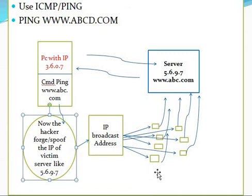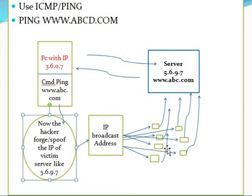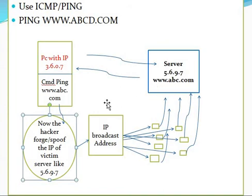The IP broadcast address sends requests to all systems over the network, and those systems send further requests to the server. When multiple requests are broadcasted by the attacker's system and the other systems acting as subsystems keep requesting services, the server becomes incapable of performing those services, resulting in denial of service — the server may crash or stop working properly.